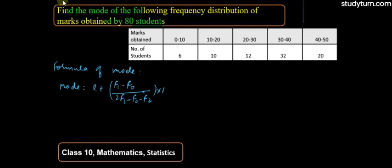Whole multiplied by H. Simply here we mark F1 as the highest frequency data, so this is F1 and this is F0 and this is F2.